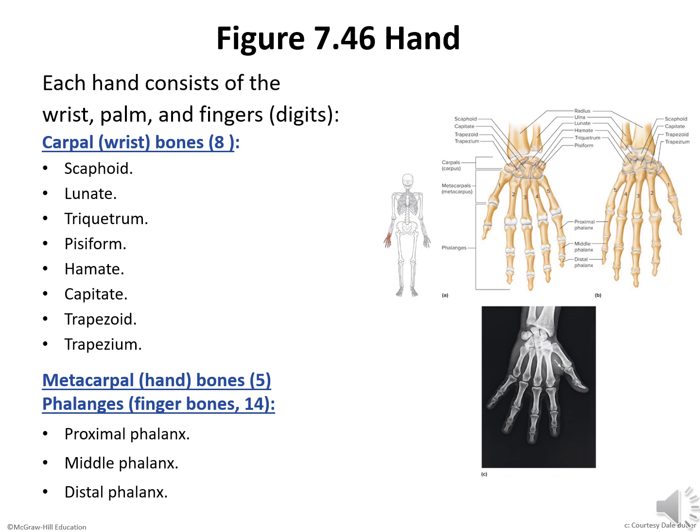The phalanges are the finger bones. Three are in each finger — a proximal, a middle, and a distal phalanx — and two are in the thumb, which lacks the middle phalanx. Thus, each hand has 14 finger bones.